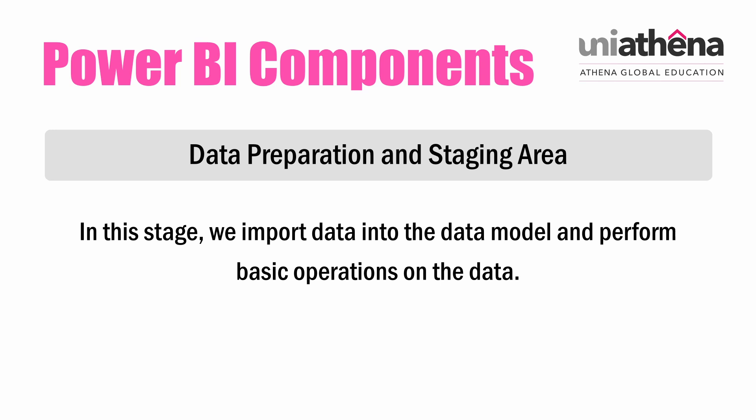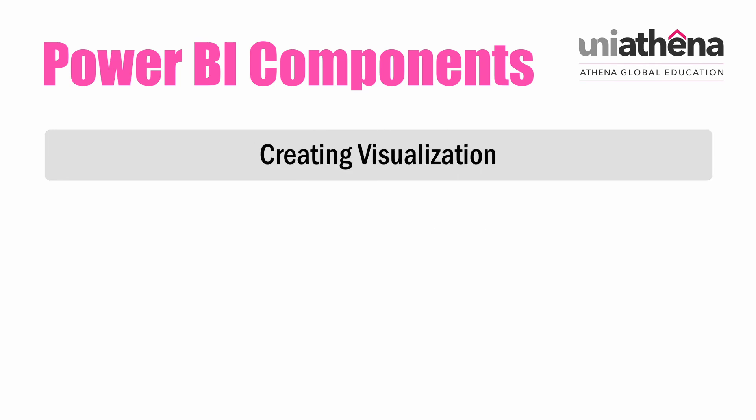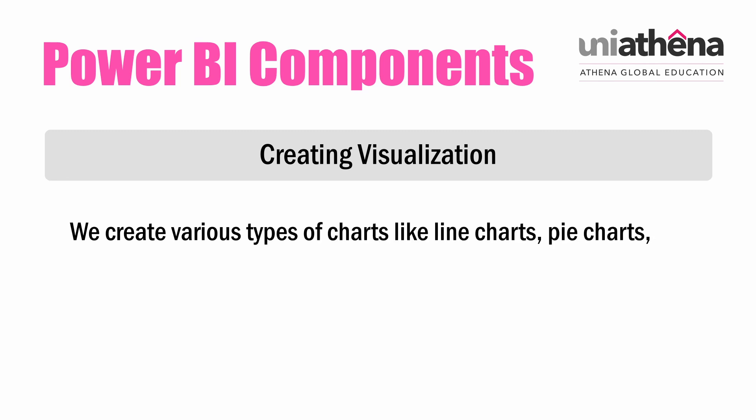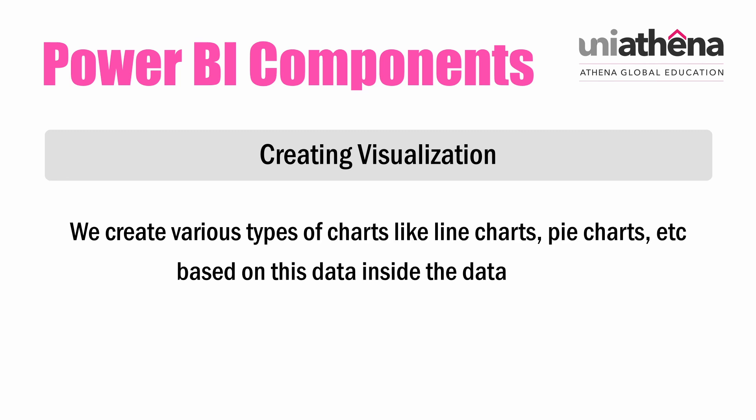We do a lot of transformations on columns and rows. We also perform basic operations like removing duplicates, adding a new row, removing a column, handling null values, etc. Once the data staging area has been completed and the data is finalized, it goes into the data model, where we create various types of charts like line charts, pie charts, etc., based on this data.